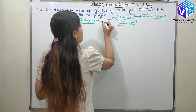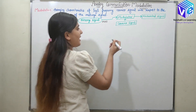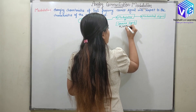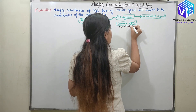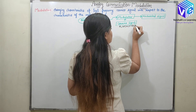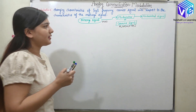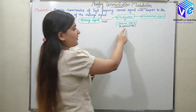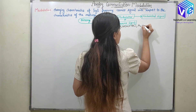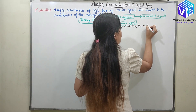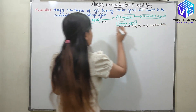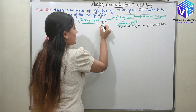Let's suppose my message signal is represented by m(t) and the carrier signal is represented by AC cos(ωC·t + φ). This is my carrier signal. Every parameter of the carrier signal — AC, ωC, and φC — are deterministic, and m(t) is random.